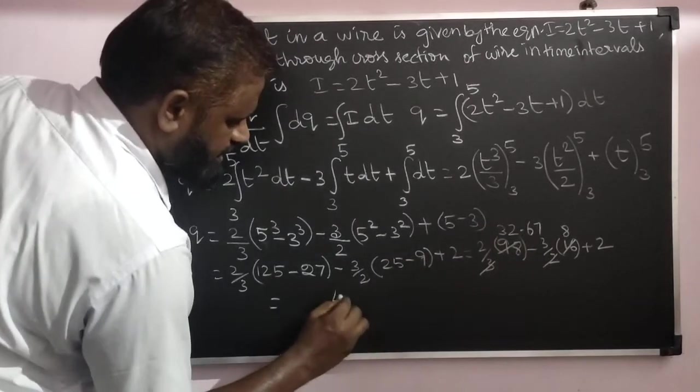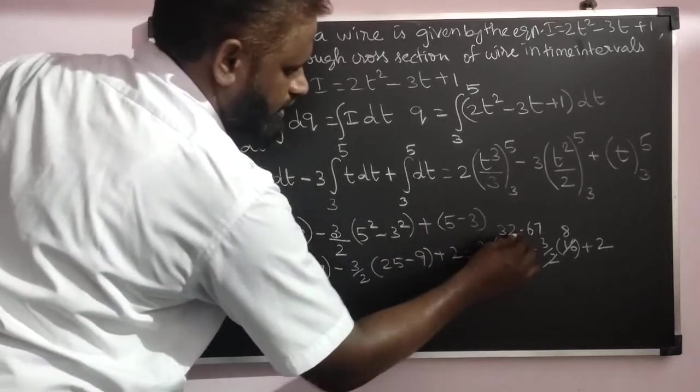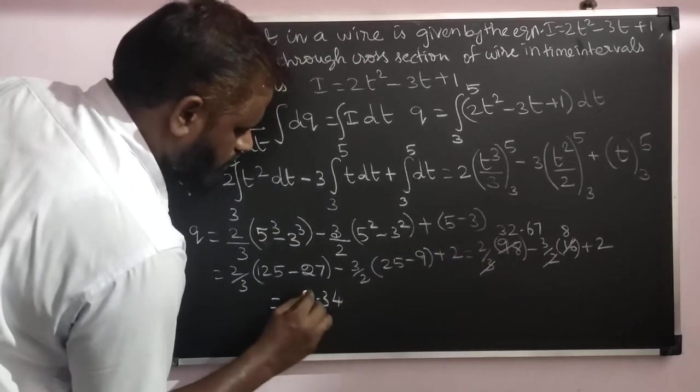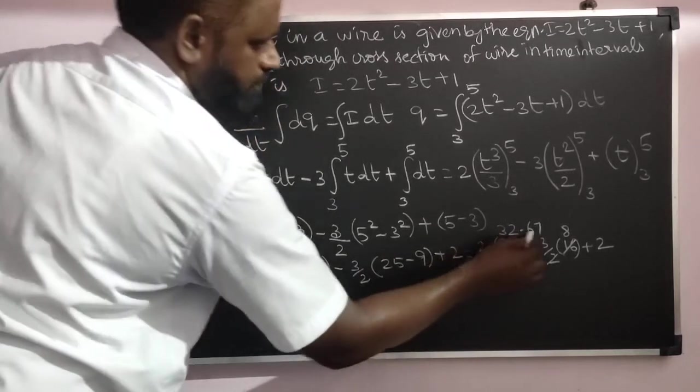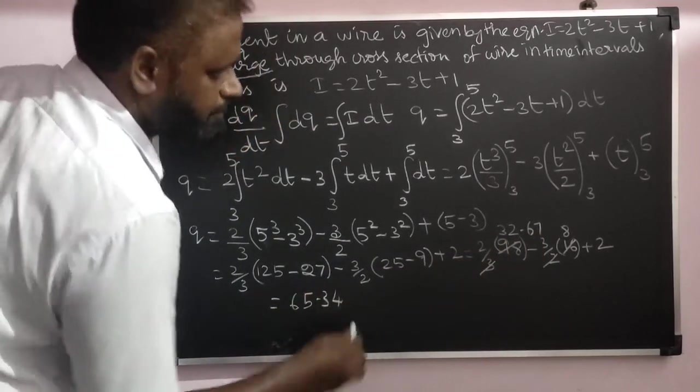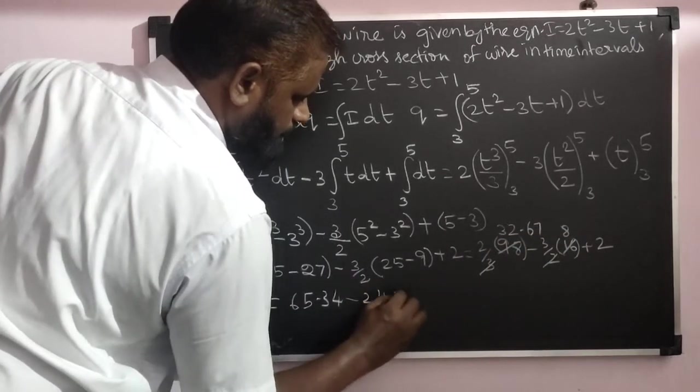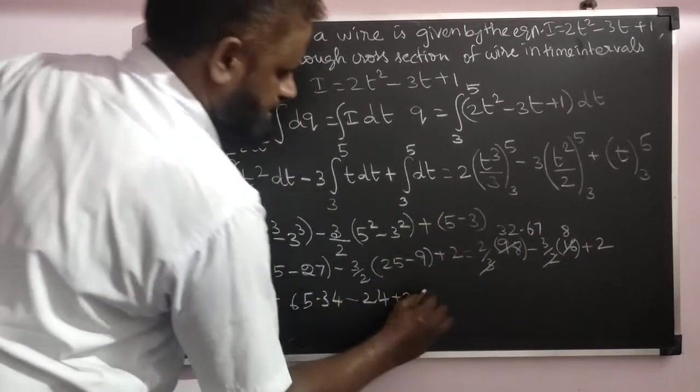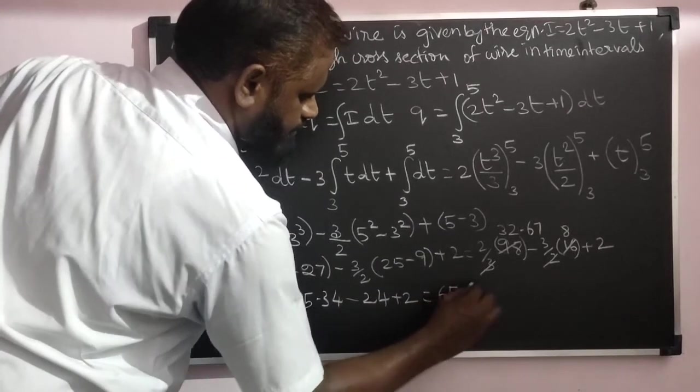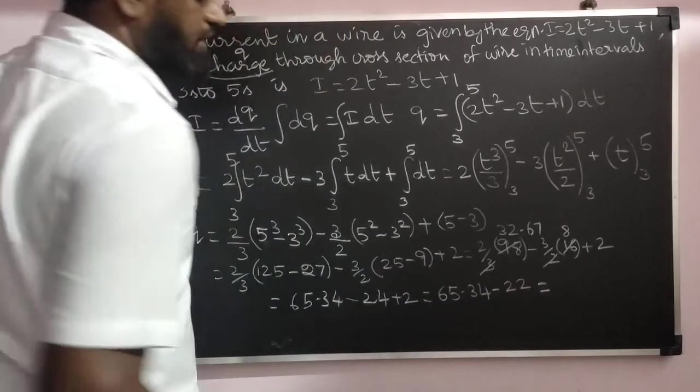Calculating step by step: this gives us 65.33 - 24 + 2, which equals 43.33.